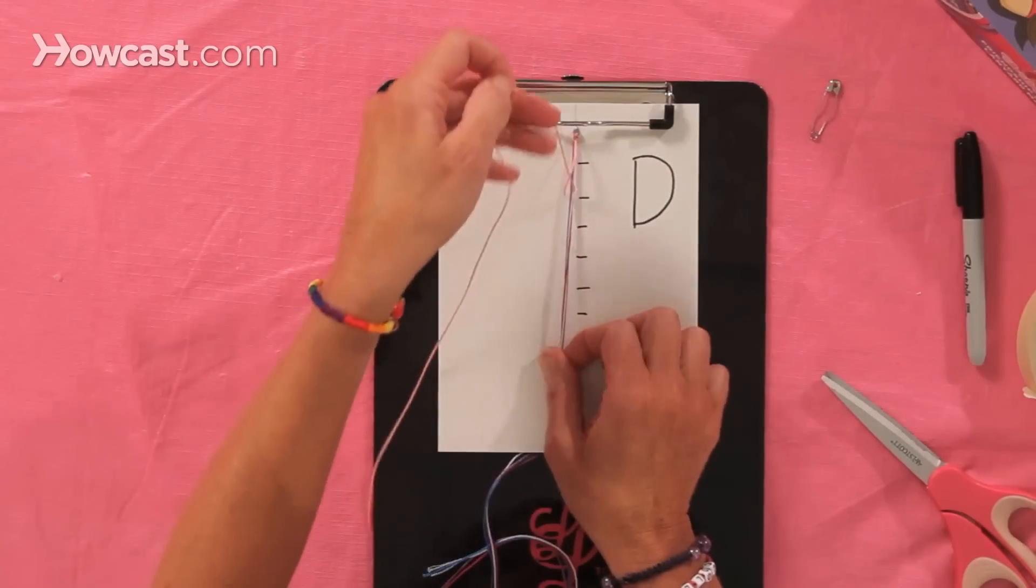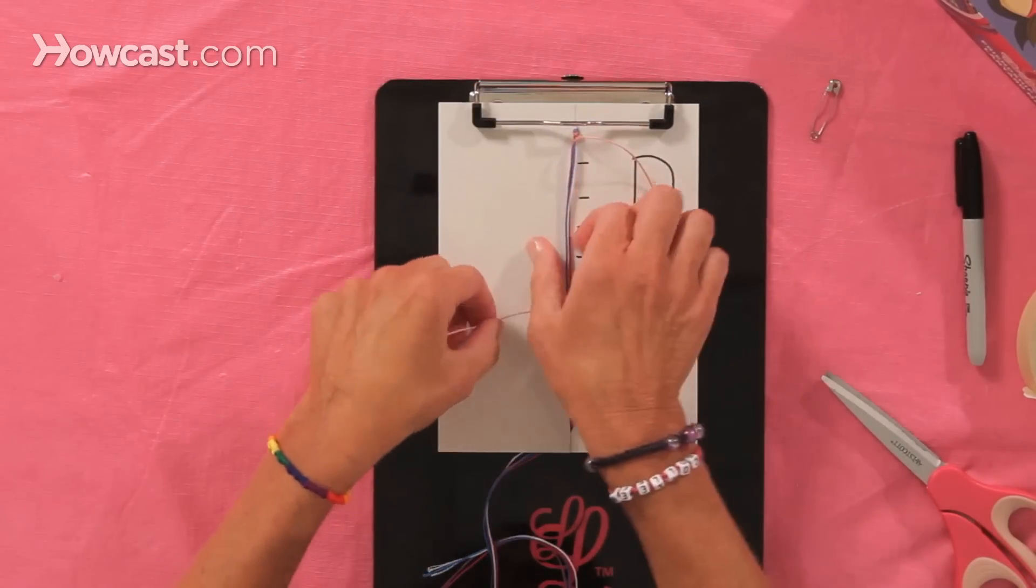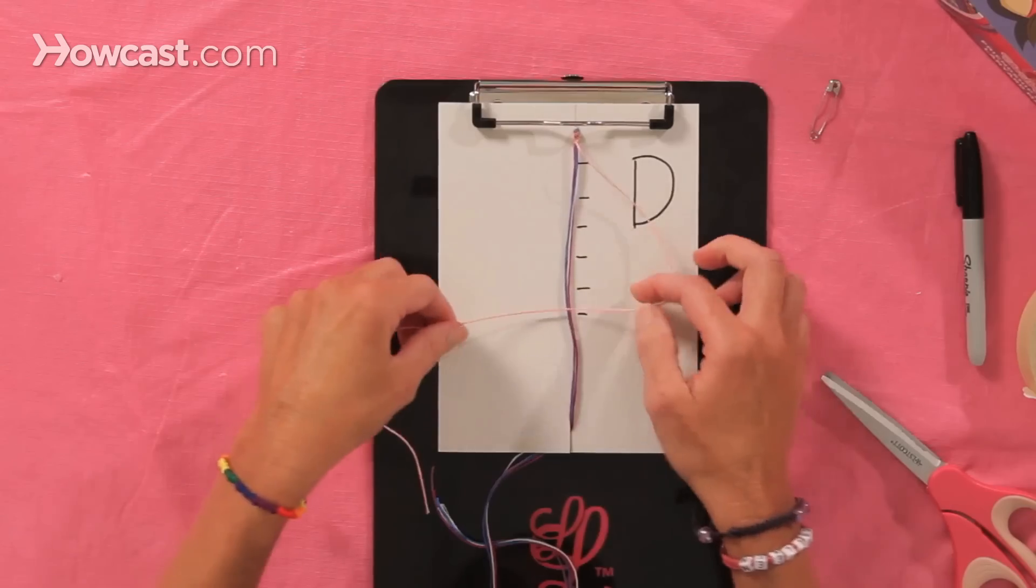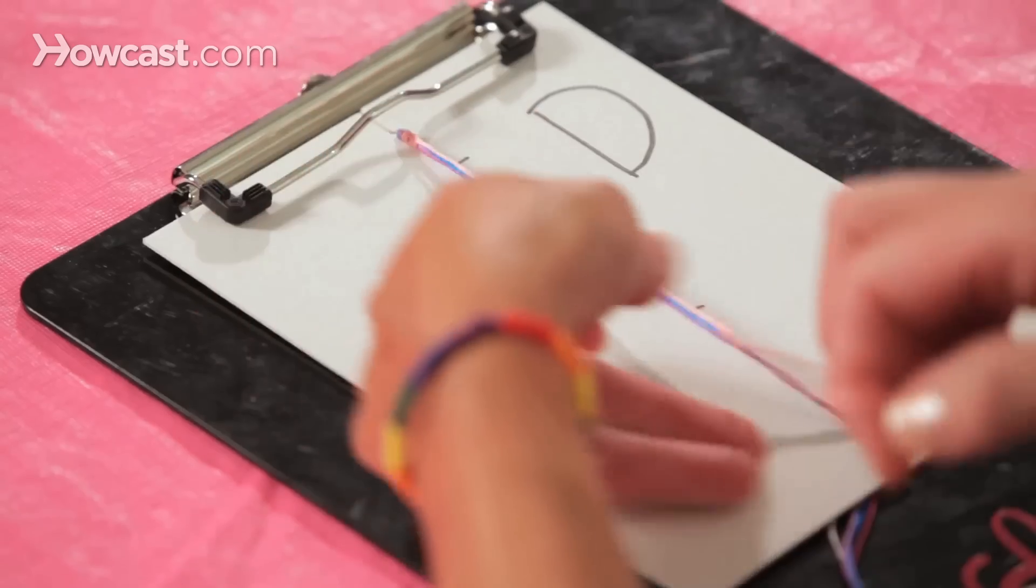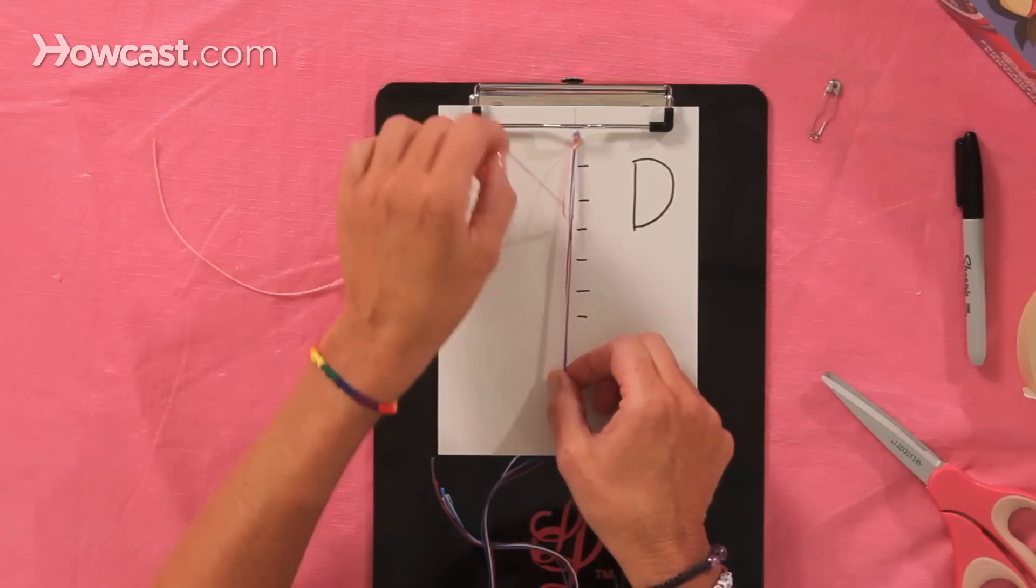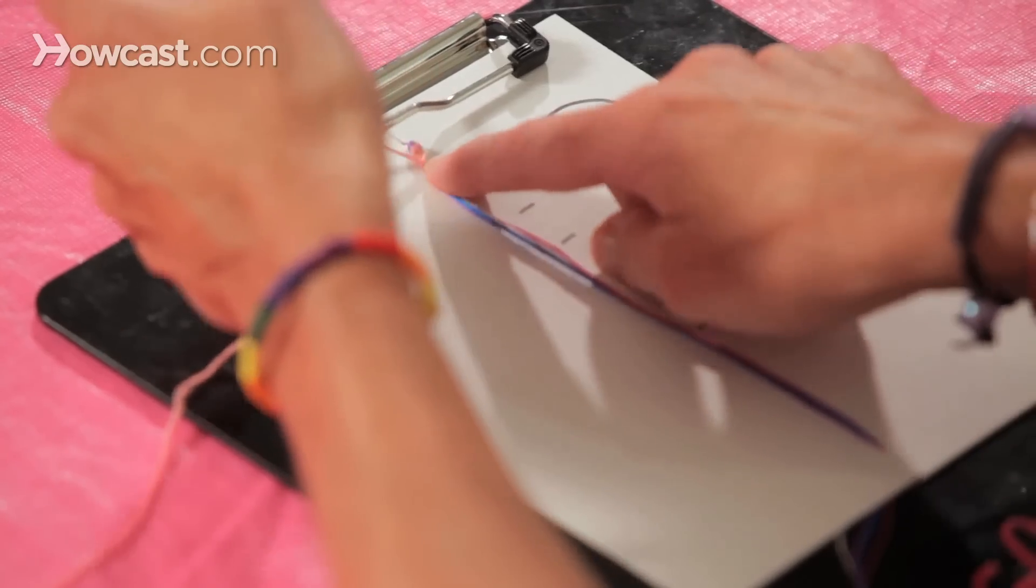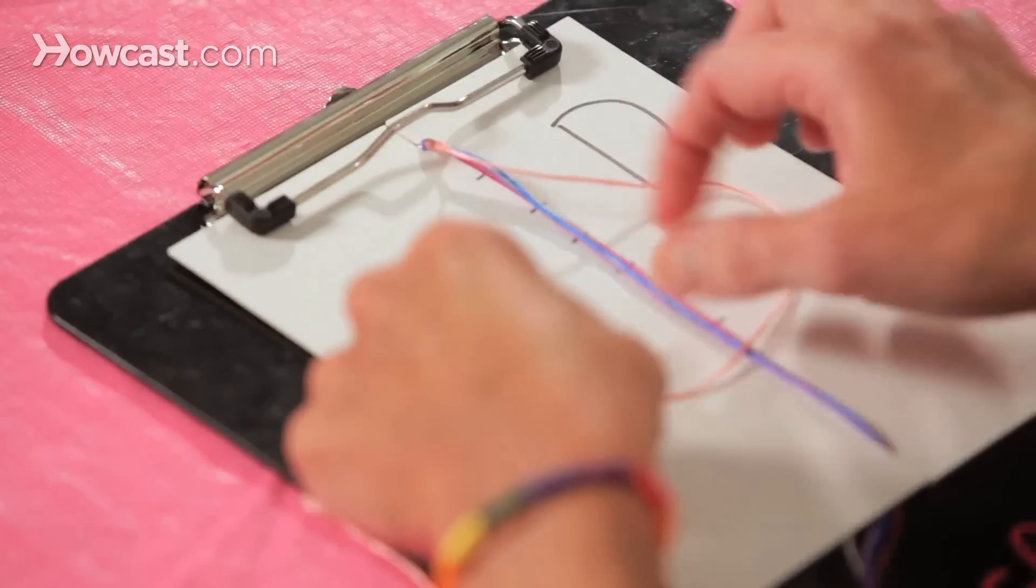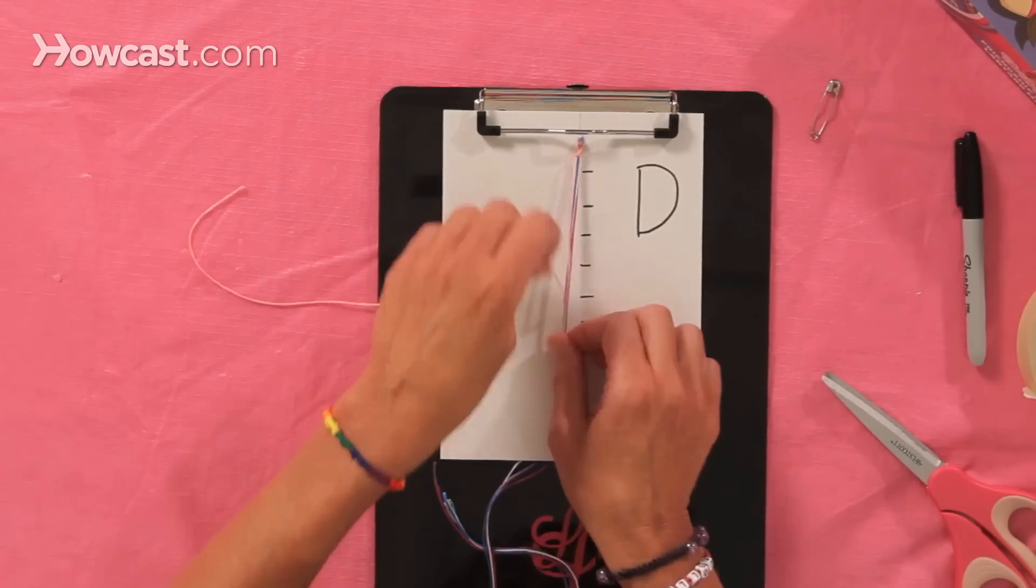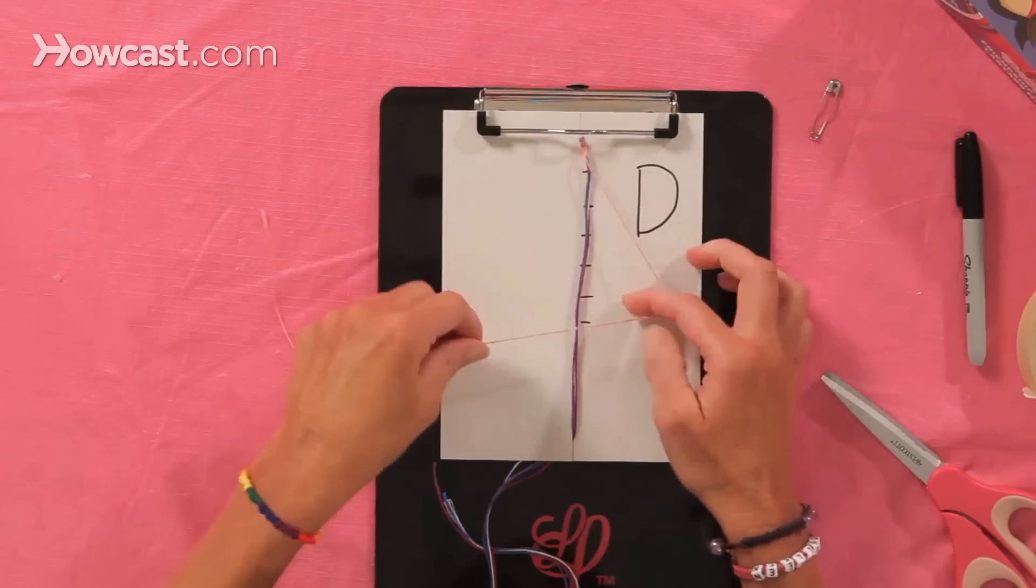And you continue to do this. We're making pink Ds to that first line, and then we're going to change the color. It's important as you pull up each knot that you pull it nice and tight next to the previous knot that you just made. You don't want to see any of these center strings underneath the pink as you make your knots.